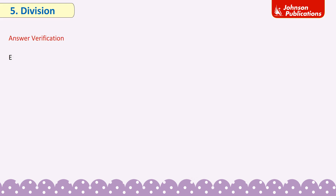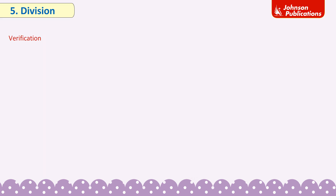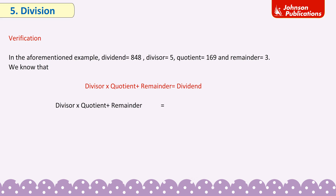Answer verification. Example: Divide 848 by 5. Quotient = 169, remainder = 3. We know that: divisor × quotient + remainder = dividend. Verification: 5 × 169 + 3 = 845 + 3 = 848 = dividend. This confirms our answer is correct.